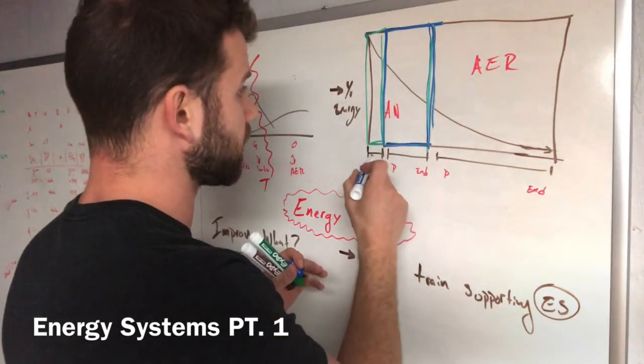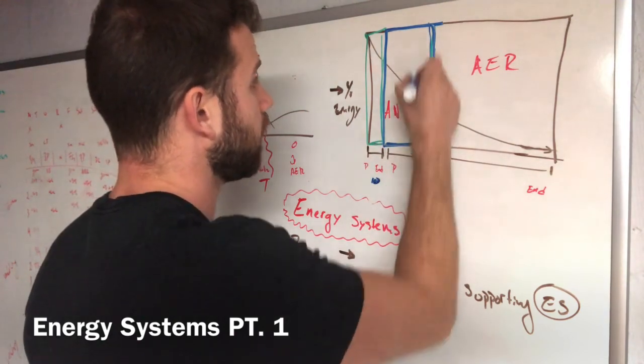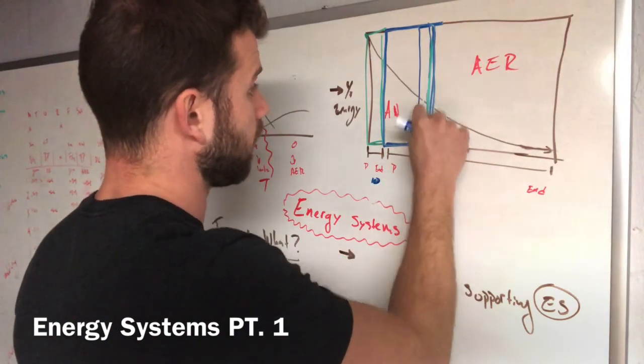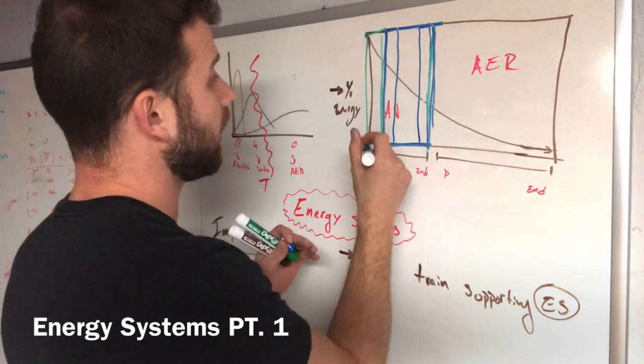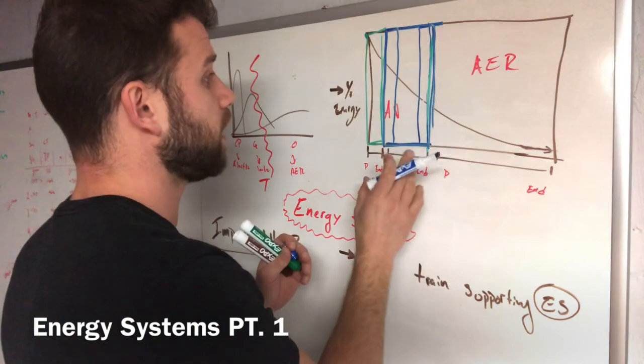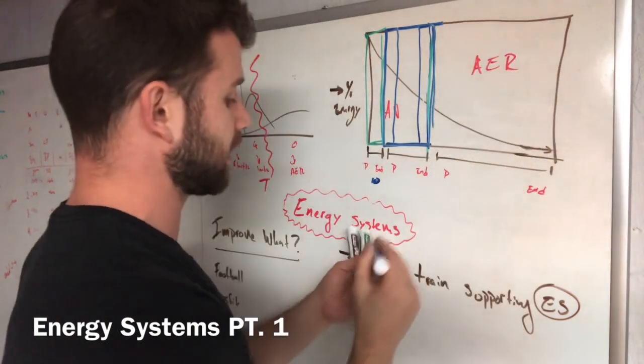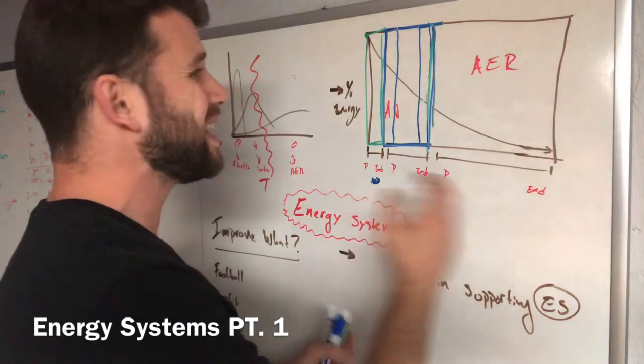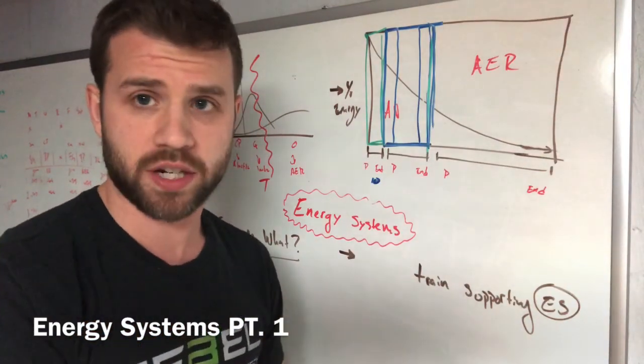And depending on where within this pathway or energy system you take a snapshot here, it's going to be more aerobic and less anaerobic. Or if we're over here on the far left, it's going to be much more anaerobic and less aerobic. So we're seeing that no matter where we go in this box, the energy system that we choose to use is going to be supported by both aerobic and anaerobic respiration.